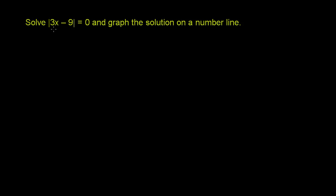Solve the absolute value of 3x minus 9 is equal to 0 and graph the solution on a number line. So let me just rewrite it. We have the absolute value of 3x minus 9 is equal to 0.